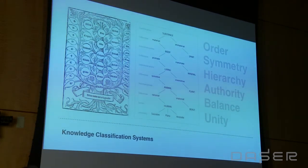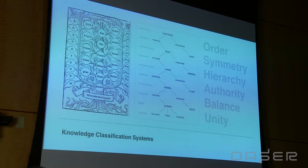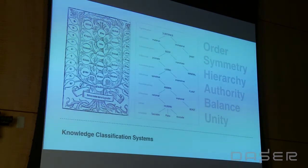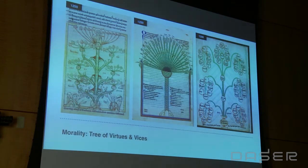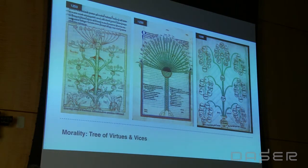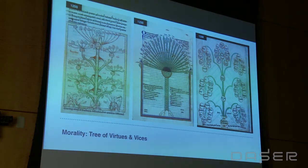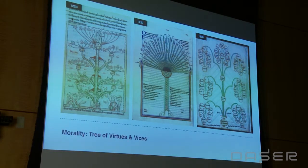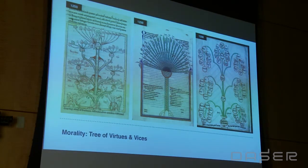Perhaps because trees have been such important, almost celestial beings throughout civilizations across time and space, at some point they also became important knowledge classification and communication tools — systematizing and conveying different aspects of human knowledge. We can see this in a variety of aspects, including mapping morality. Trees were being used as visual metaphors to display different aspects of human morality, like the tree of virtues and the tree of vices, depicting what you should do and what you should not do. It's interesting that the tree of sins is normally depicted sick and dying, while the tree of virtues is upright and exuberant.